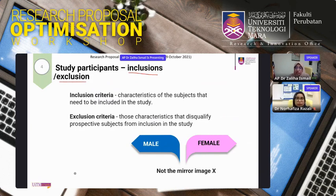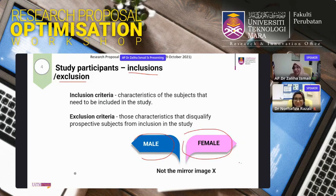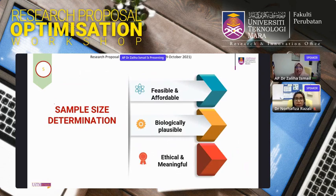Inclusion criteria define the characteristics subjects must have to be included. Exclusion criteria disqualify prospective subjects, but they should not simply be the mirror image of inclusion criteria. For example, if inclusion is 'male,' exclusion should not be 'female.' Exclusion must offer something unique — for instance, inclusion could be 'those who give consent' and exclusion could be 'those unable to complete the questionnaire,' not merely the opposite of inclusion.